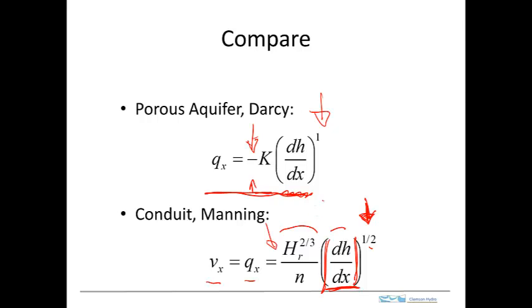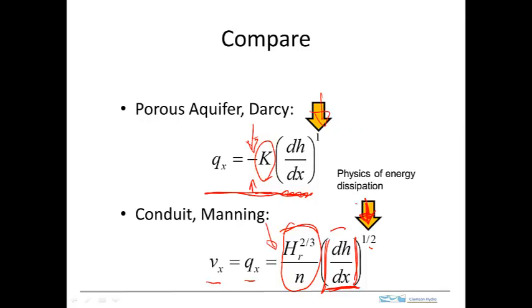The other difference is this term. Here we have K and here we have the hydraulic radius divided by the roughness. In both cases, we can think of these terms as how we relate the flux to the driving gradient. They have a certain amount of analogy there.